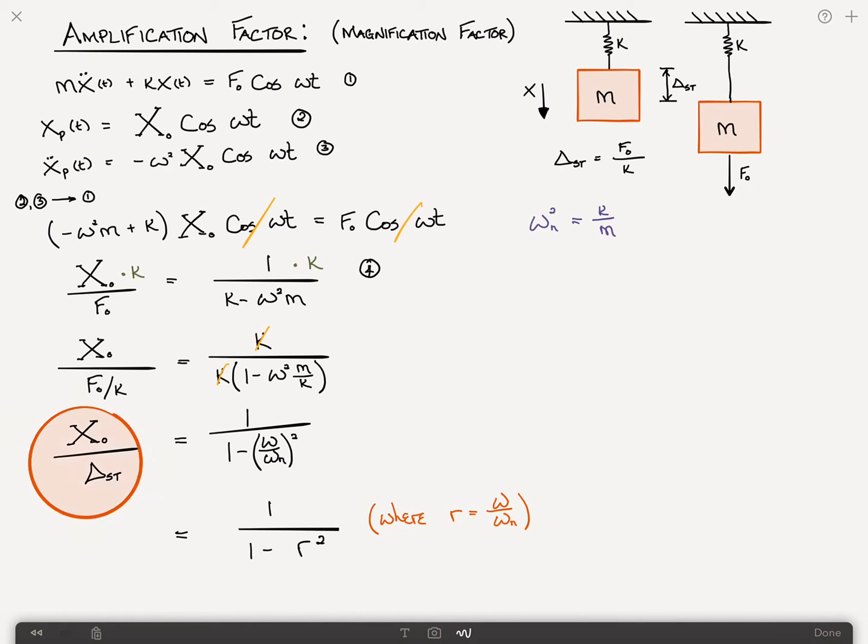And this quantity here is what we call the amplification factor or the magnification factor. And what is it? It's the ratio between the dynamic amplitude, x sub 0, and the static amplitude or the static deflection. So in other words, as a result of the fact that this is not a static problem, we get some sort of an amplitude of displacement, x sub 0, that is different from delta sub st, delta static.